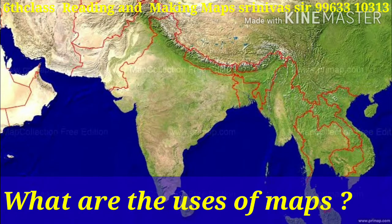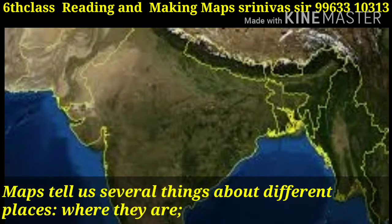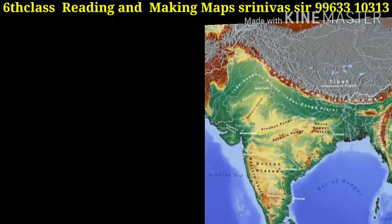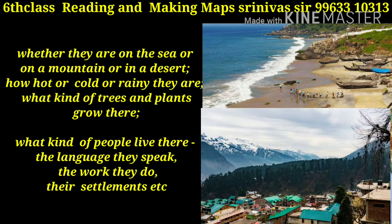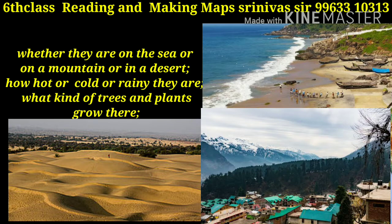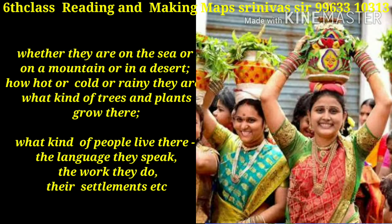What are the uses of maps? Maps tell us several things about different places — where they are, whether they are on the sea, on a mountain, or in a desert, how hot, cold, or rainy they are, what kind of trees and plants grow there, what kind of people live there, the language they speak, the work they do, and their settlements.